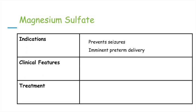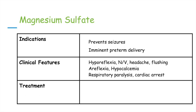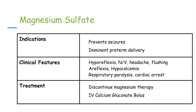The clinical features of magnesium toxicity start with hyporeflexia as the first sign. Other initial signs and symptoms include nausea, vomiting, headaches, flushing, areflexia, and hypocalcemia. Late and lethal clinical features include respiratory distress and cardiac arrest. To treat magnesium toxicity, discontinue magnesium therapy and administer IV calcium gluconate, which is given to prevent cardiac arrest and to reverse neuromuscular paralysis.